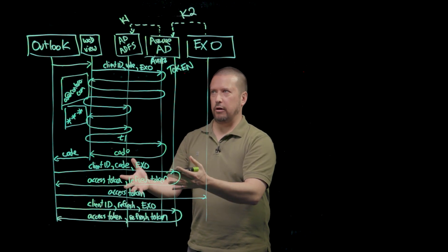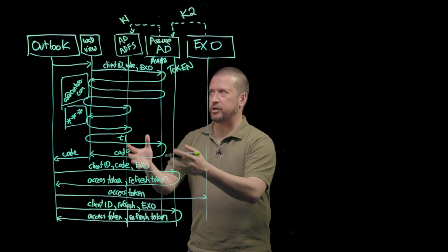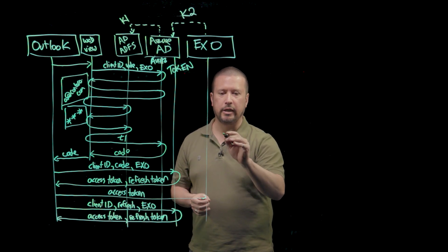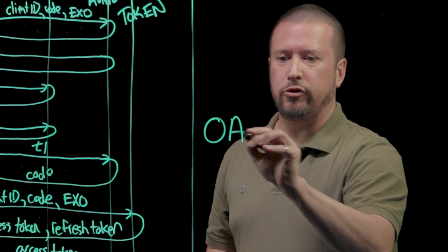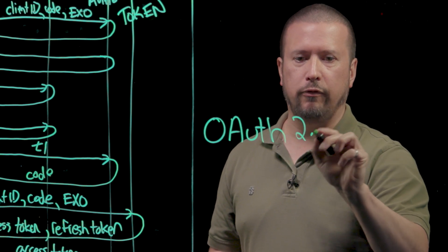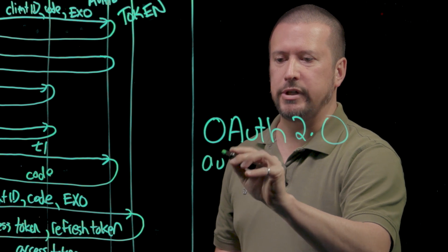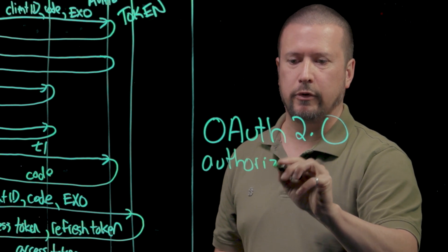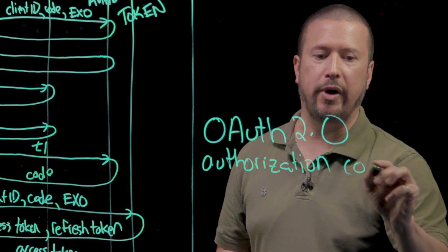What we've looked at here and the way that we've done this with Outlook and Exchange for Modern Authentication is an OAuth 2.0 protocol flow that's called the authorization code grant flow.